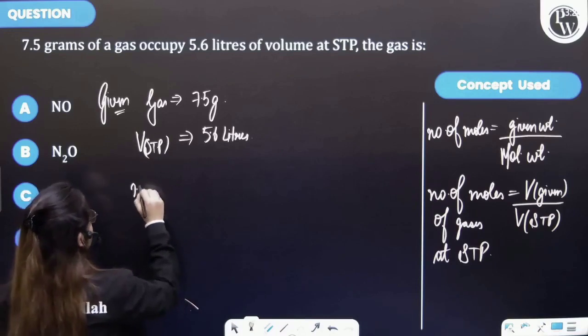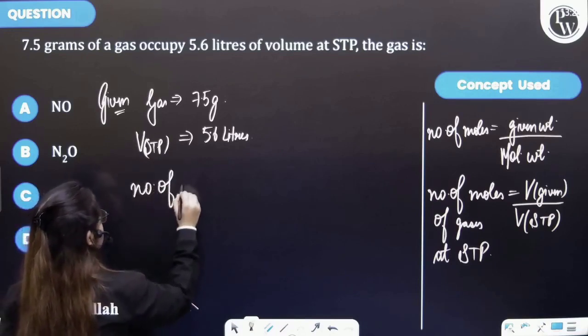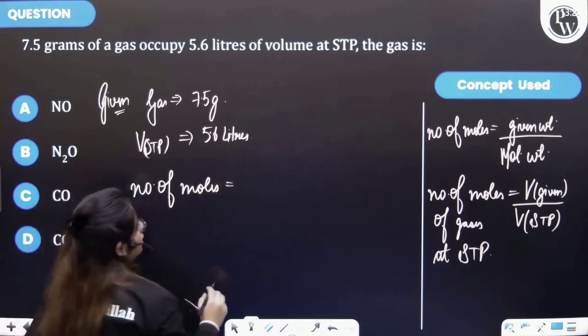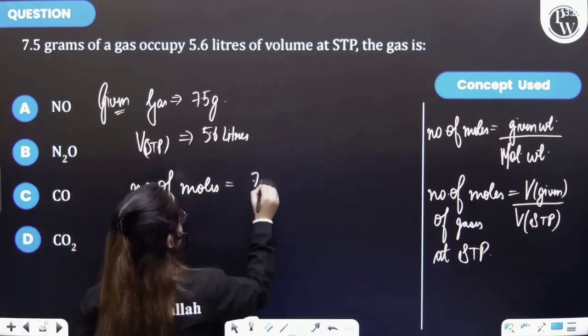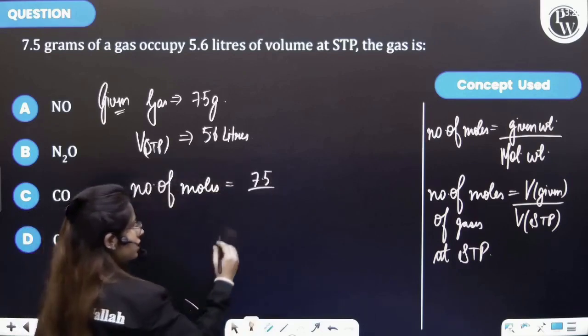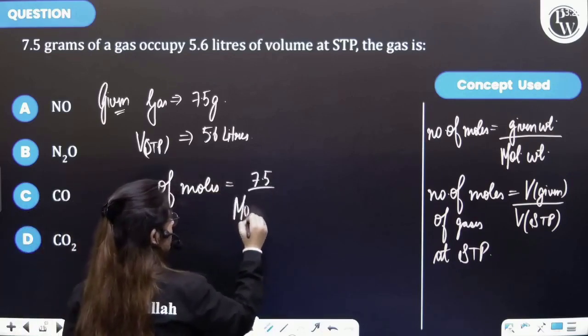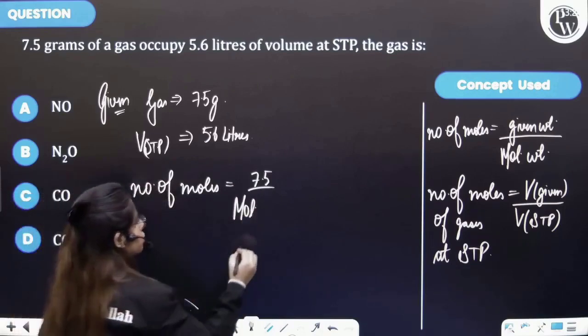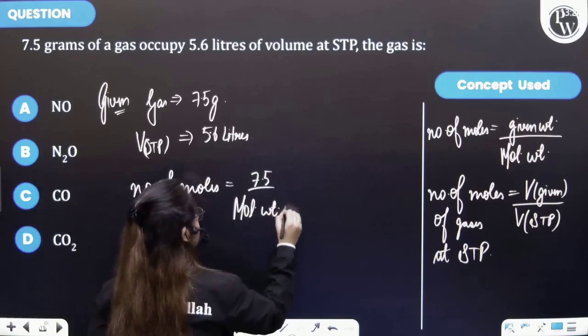So let's firstly find the number of moles. Given weight is 7.5 grams and molecular weight we have to find out. Corresponding to that, we will get to know which gas it is. So molecular weight of gas.